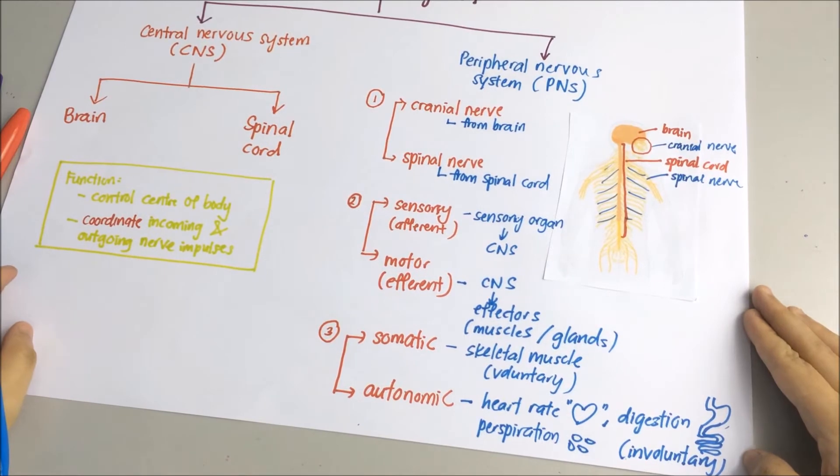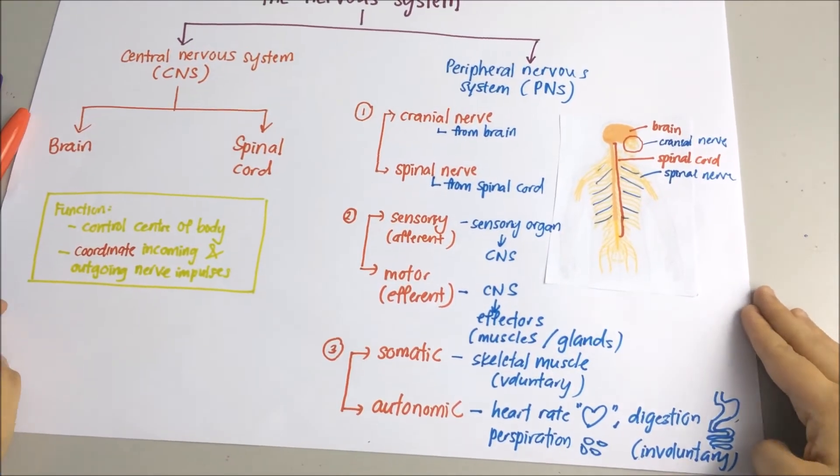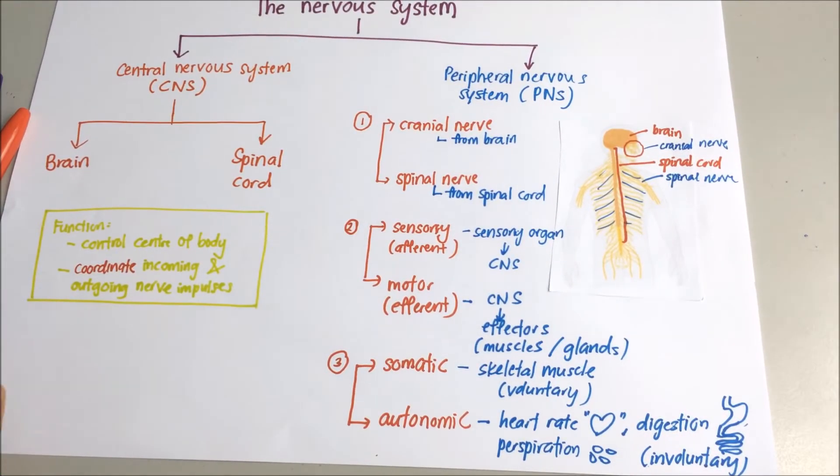So now, let's have a quick recap. Nervous system is divided into central and peripheral.